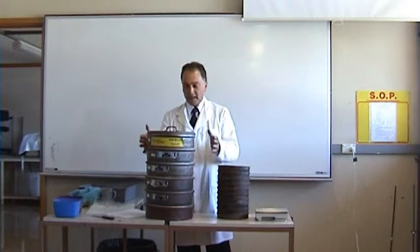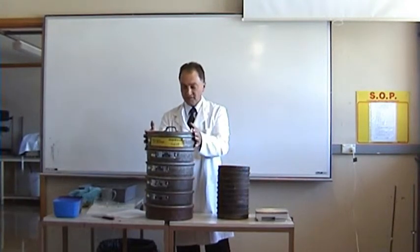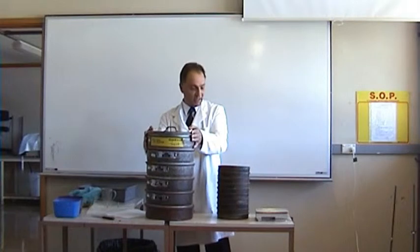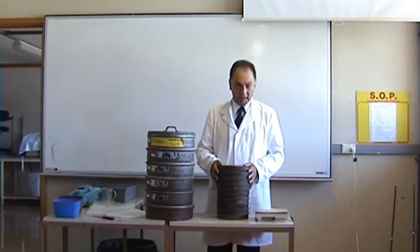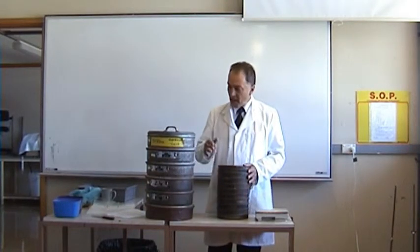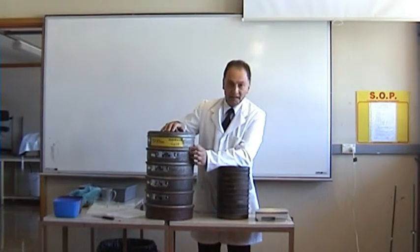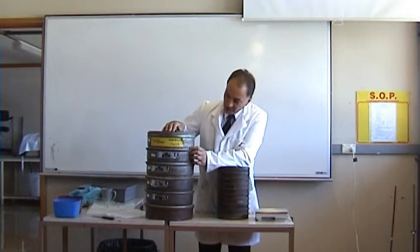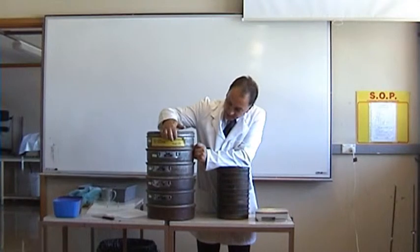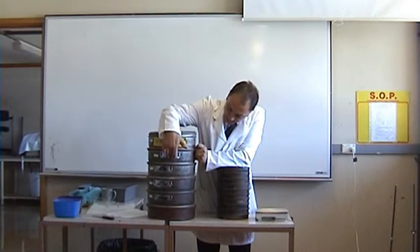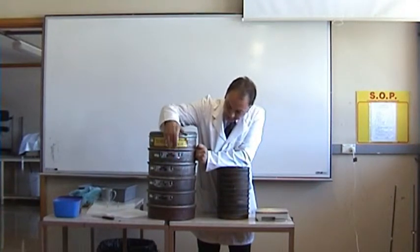Here we have two different stacks of sieves: a larger incomplete set and the smaller one that we will be using today. The larger set has the aperture size in millimetres, and the aperture size can be seen etched on the stainless steel strip.